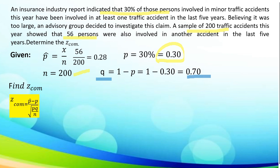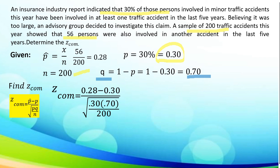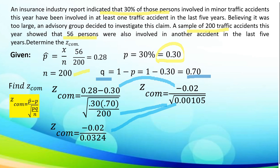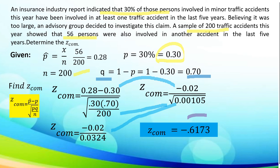Let us find Z-com using the formula P-hat minus P, all over the square root of PQ over N. We have 0.28 minus 0.30 divided by the square root of 0.30 times 0.70 all over 200. 0.28 minus 0.30 is negative 0.02. And 0.30 times 0.70 divided by 200 is equal to the square root of 0.00105, which gives 0.0324. Thus, dividing negative 0.02 by 0.0324, we have Z-com equal to negative 0.6173.